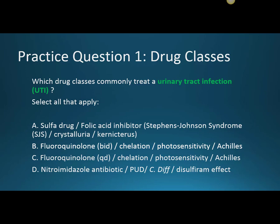With fluoroquinolones, the first thing I think with Cipro is that you take it twice a day versus levofloxacin, which you only take once a day. But with both, I immediately think of chelation — that binding with aluminum, magnesium, or calcium divalent cations that bind to the drug itself, making it inert. I think of photosensitivity, burning very easily in the sun. Then I think of Achilles tendon rupture, which is very graphic, but this tendon issue has actually caused the FDA to make a change.